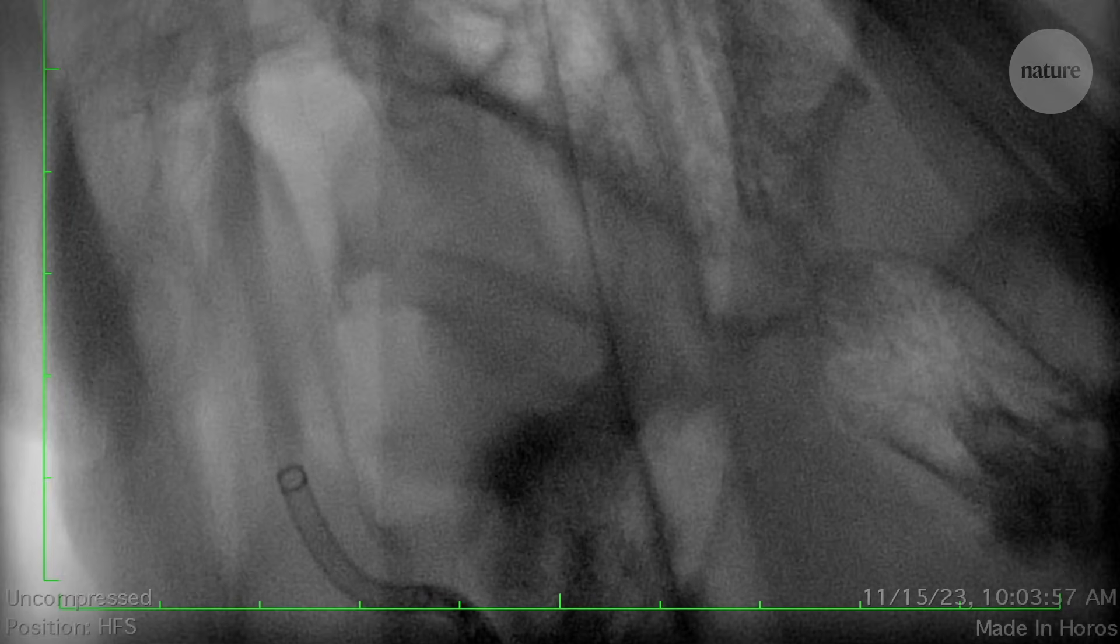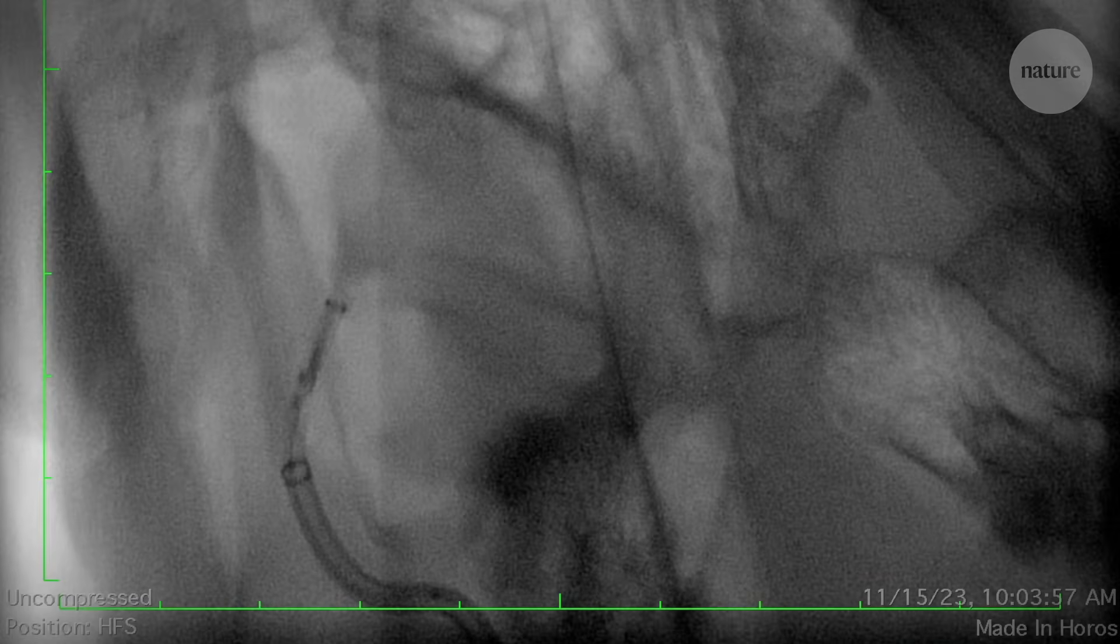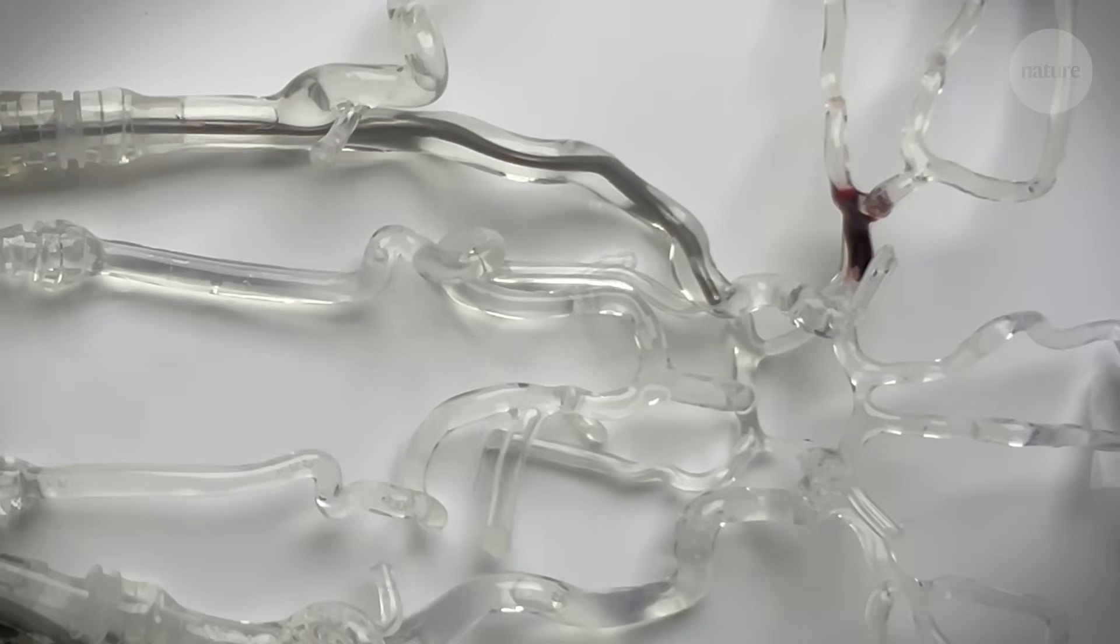This is what the millispinner looks like in a pig kidney. It's a tiny device on the end of a long catheter that winds its way through the blood vessels until it reaches a blockage.